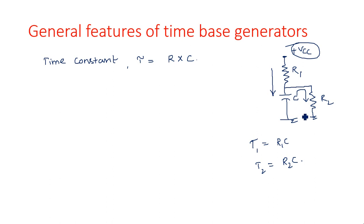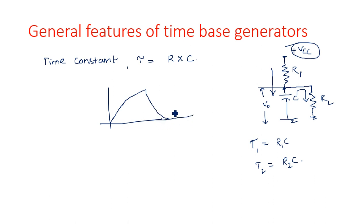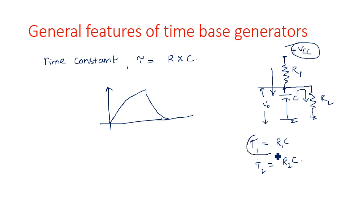The capacitor value is the same but the resistor values differ — one for charging and another for discharging. Observing the voltage across the capacitor, we see it charges and then discharges, producing a waveform called a sweep voltage or sweep signal. The circuit that generates such waveforms is known as a time base generator, sweep generator, or sawtooth waveform generator. The time period is fixed by the values of resistance and capacitance.